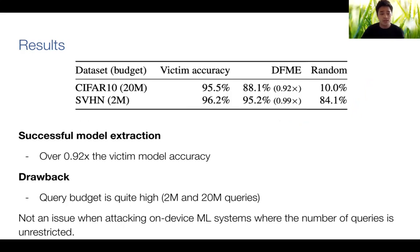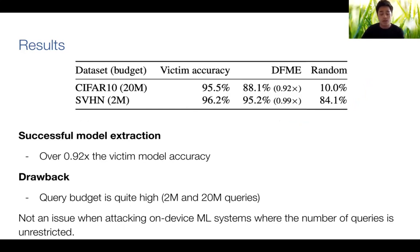As for the results, we see that on CIFAR-10 and SVHN, the data-free model extraction attack achieved high accuracy. This is non-trivial compared to random queries sent to the victim model, which only achieve random guessing. One drawback is that the query budget is quite high — 2 and 20 million queries for SVHN and CIFAR-10 respectively. However, this is not an issue when attacking a non-device machine learning system where the number of queries is unrestricted.